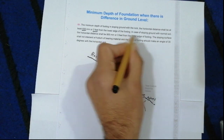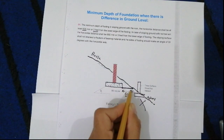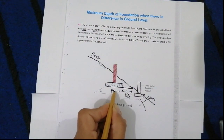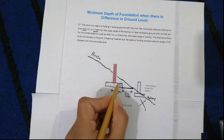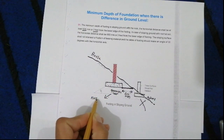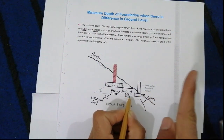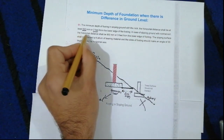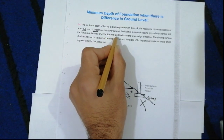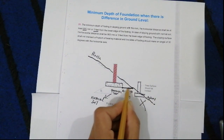Now in the case of sloping ground with normal soil — not rock — this distance should be a minimum of 900 millimeters. In normal soil, the horizontal distance shall be 900 millimeters, or three feet, from the lower edge of the footing. So in normal soil it is 900 mm, but in rock it is 600 mm.